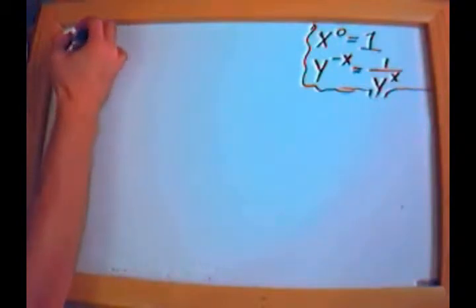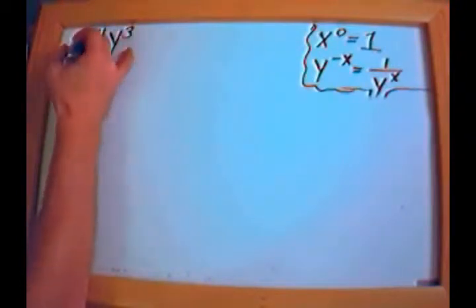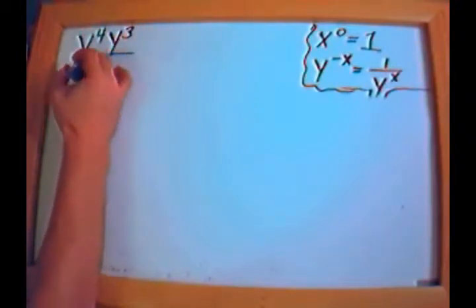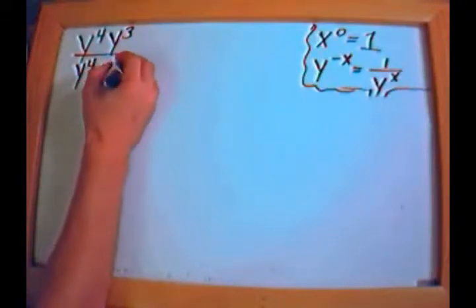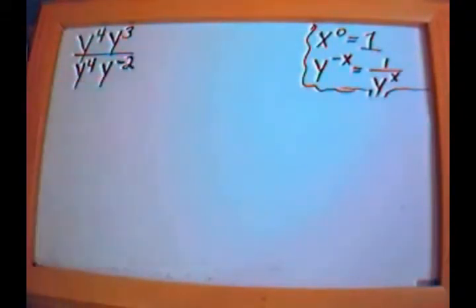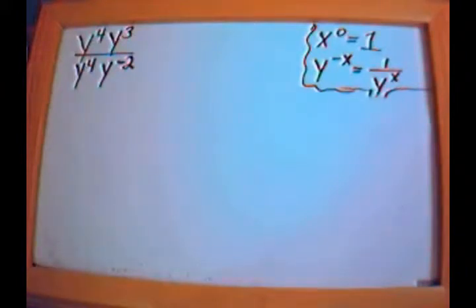Continuing with simplifying exponents: y to the fourth times y to the third over y to the fourth times y to the negative 2. There are a number of ways you can do this — I'm going to show you three different ways, three different orders in which you can approach it.